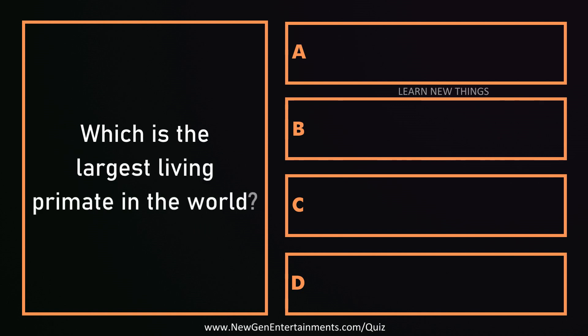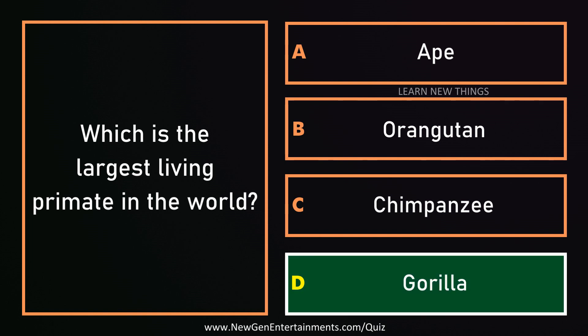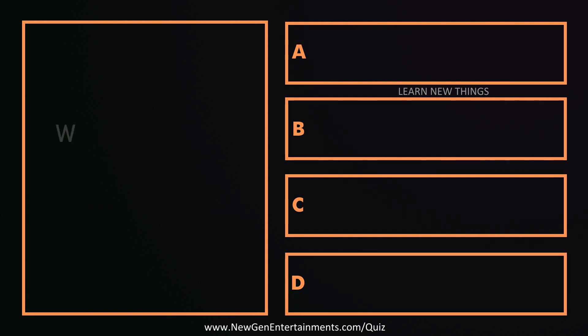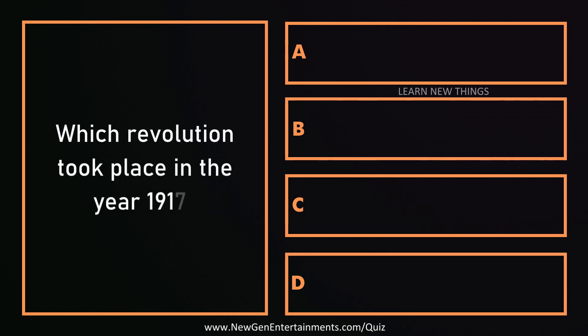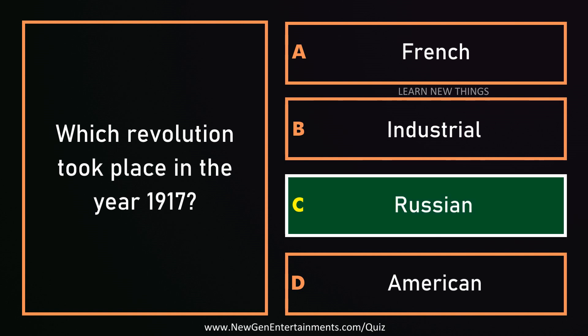Which is the largest living primate in the world? Gorilla. Which revolution took place in the year 1917? The Russian Revolution.